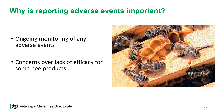Some examples of actions could be increased monitoring of the product or adjustments made to the product's SPC. There are currently concerns about lack of efficacy reports in other countries for some bee products. However, we have not had reports of this in the UK, despite similar concerns being expressed informally within the beekeeping community. Without receiving reports from UK beekeepers, we are unable to gather sufficient data to ensure that any issues are acted on appropriately.